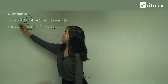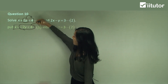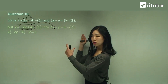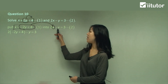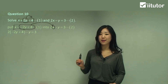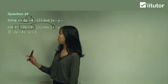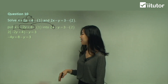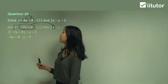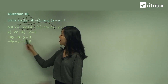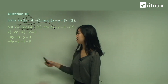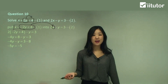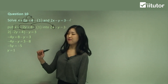So I put: 2 times (negative 2y plus 4) minus y equals 3. Now I'm just left with y's. Expand it out — 2 times negative 2y is negative 4y, 2 times 4 is 8, minus y equals 3. Get rid of the brackets. Move all like terms together — negative 4y minus y on the left, 3 minus 8 on the right. Negative 4y minus y is negative 5y, and 3 minus 8 is negative 5. Divide both sides by negative 5, so y equals 1.